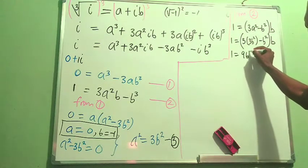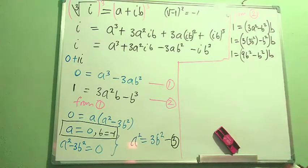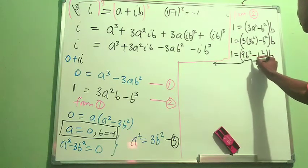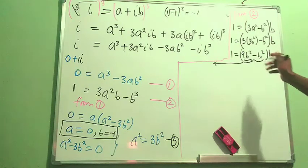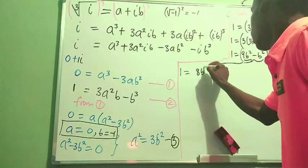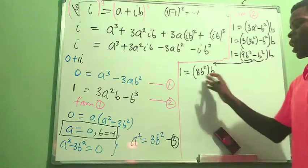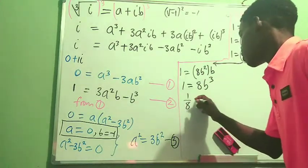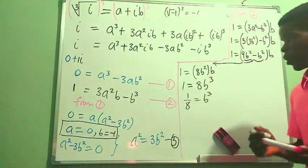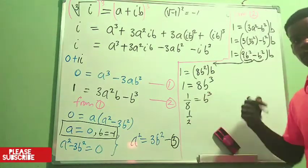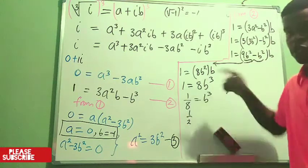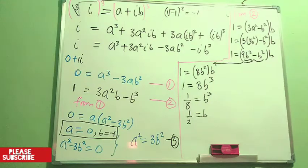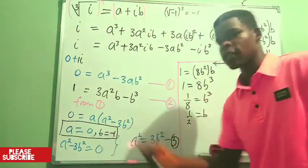So we have 1 = 8b³, which gives b³ = 1/8. Taking the cube root of both sides, b = 1/2 — the cube root of 1 is 1 and the cube root of 8 is 2. So b = 1/2.